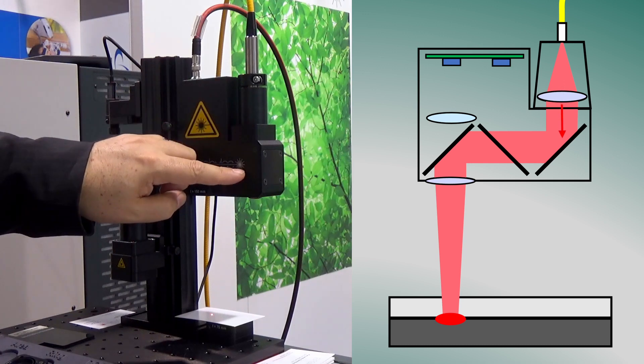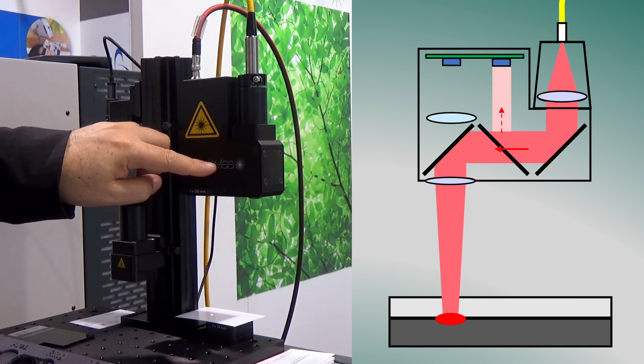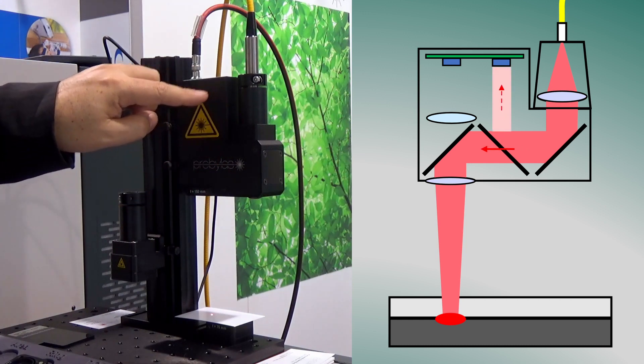It goes over the mirror here, is reflected to a beam divider here, which sends 1% of the laser power up to a power measurement up here.